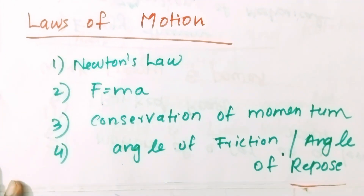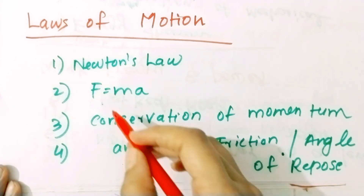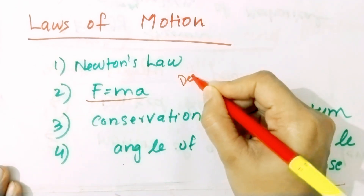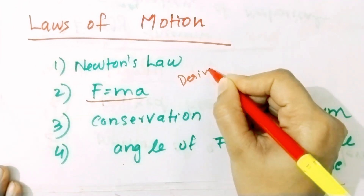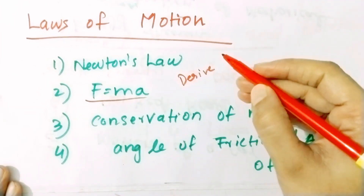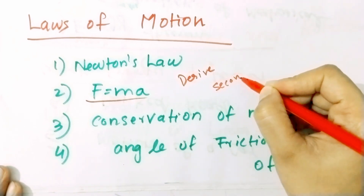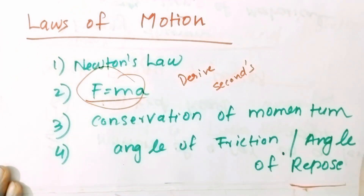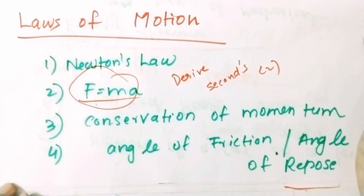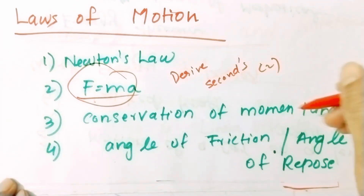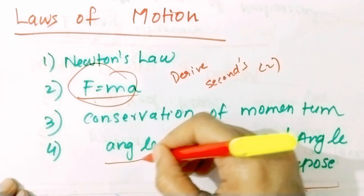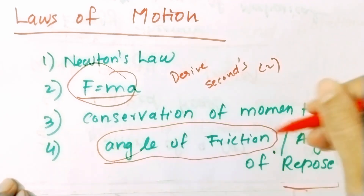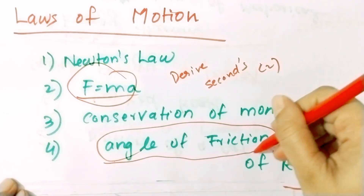Now let's look at all of Newton's laws — first, second, and third. F equals ma is derived from Newton's second law. For two marks: what is the conservation of momentum? Angle of friction derivation — this is the first derivation. Then angle of repose.